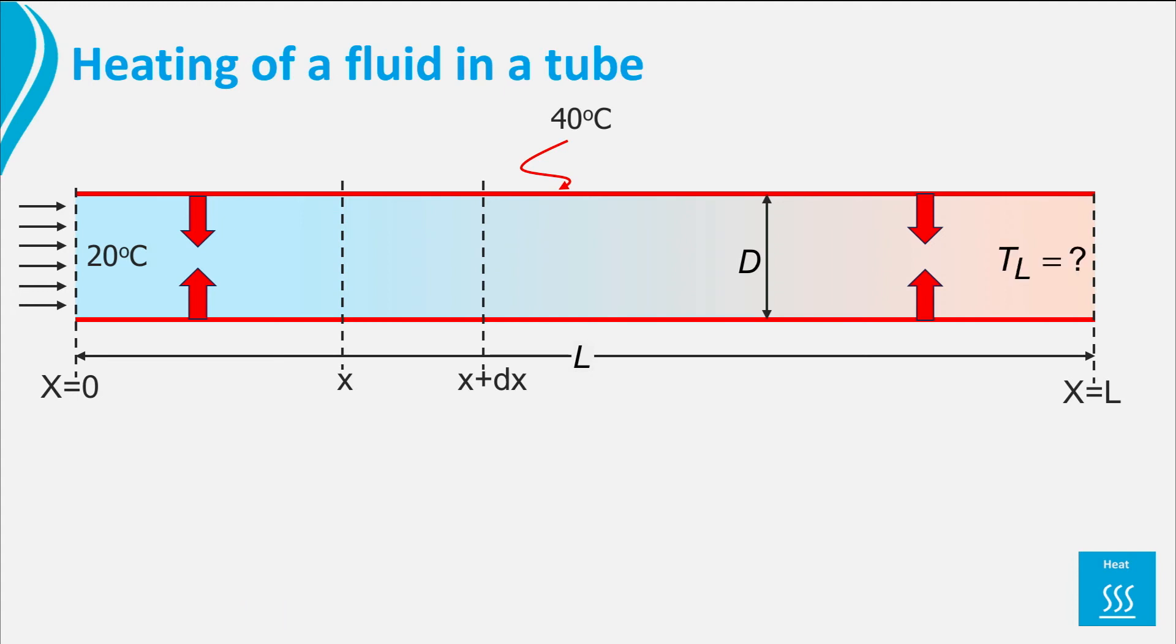But what to do if the Reynolds number is below 2000 and we have not a turbulent flow, but a laminar pipe flow? How can we then solve this problem?